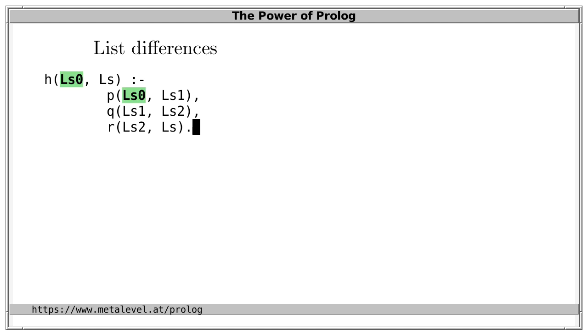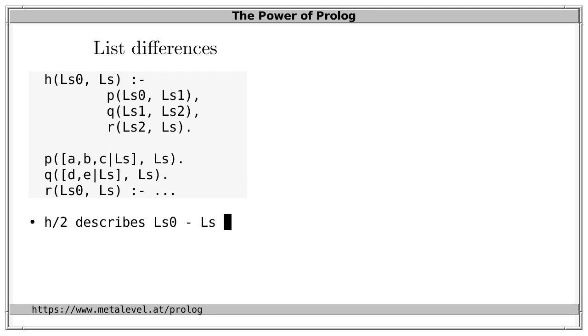The arguments here follow a very specific pattern. We start with LS0 and systematically thread through the other arguments, and we end with the tail of the list we are describing. As long as we follow this convention, also in the definitions of P, Q and R, these predicates can all be arbitrarily complex and also invoke other predicates or even themselves. In total, h describes the list difference LS0 minus LS.